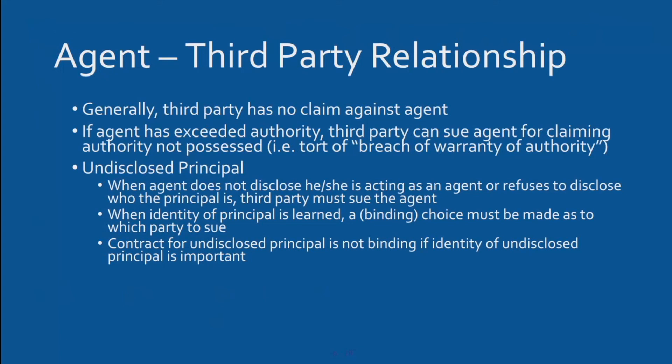With an undisclosed principal — when the agent doesn't disclose who they're acting for or refuses to reveal the principal's identity — the third party may sue the agent. For example, if Sally sold you insurance but never told you which company she represents, and you have an accident and they refuse to cover you, you can't sue someone you don't know. You have to be allowed to go after the agent in that case.